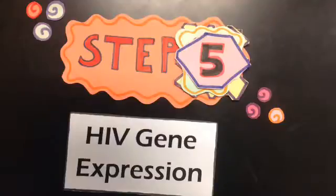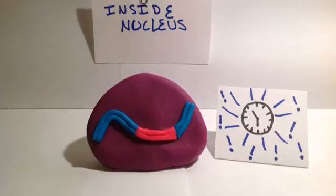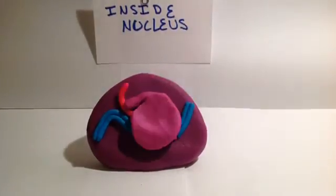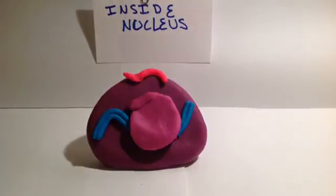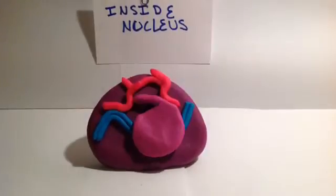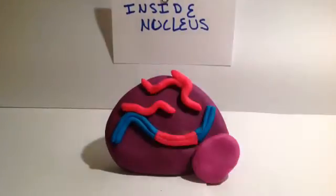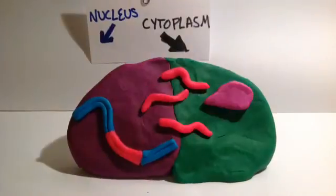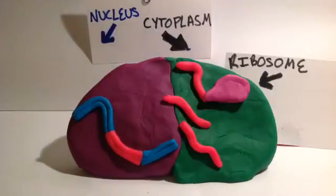The signal that sparks the transcription and translation of HIV DNA into mRNA is unknown. However, once the trigger occurs, the cell begins to make copies of the HIV DNA, producing mRNA. Some of this RNA acts as mRNA and produces proteins, while other mRNAs are produced to go into new HIV particles.